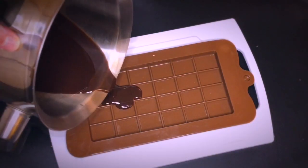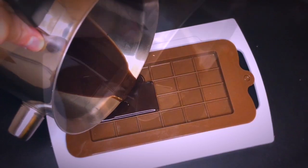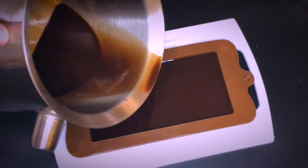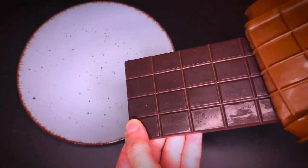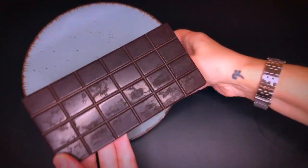You want to pour at room temperature and please do not spritz the top with rubbing alcohol. Let it harden in the fridge and then unmold. There you have a completely natural and healthy chocolate.